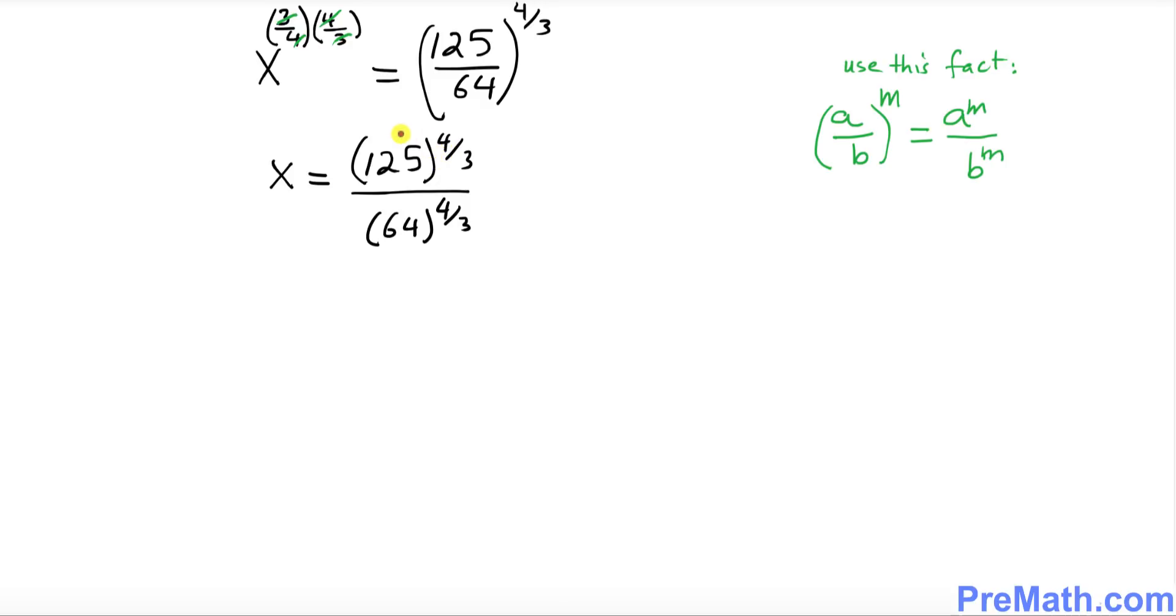Before we get started, I want you to look at 125. Isn't it 125 could be written as 5 power 3? That means you multiply 5 three times you're going to get 125. And likewise, 64 could be written as 4 power 3. So that means I can replace this 125 and 64 by these numbers with the exponent.